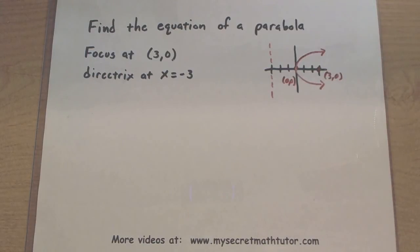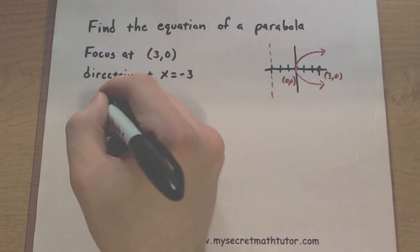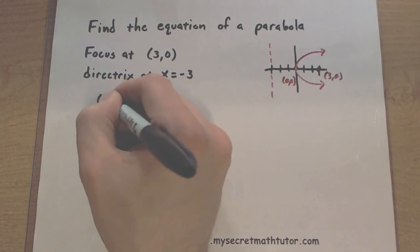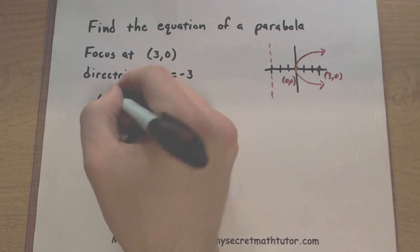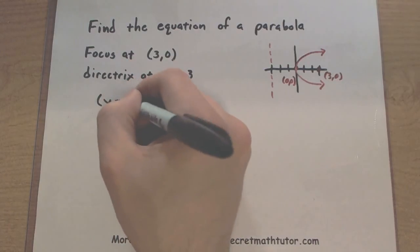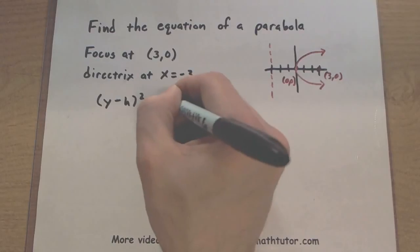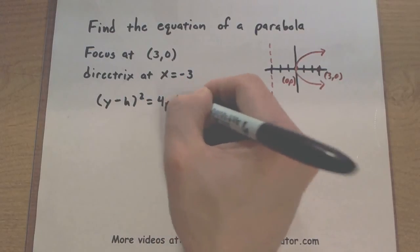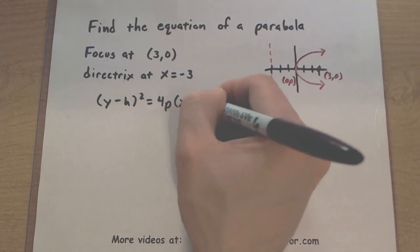All right, let's see how this is going to help me. So now that I know that the parabola is on its side, I might take a look at our formula for the parabola. This looks like y minus h squared equals 4p times x minus k.